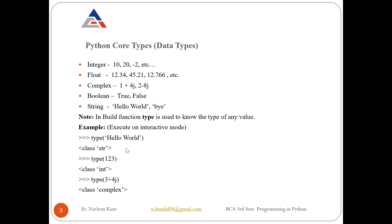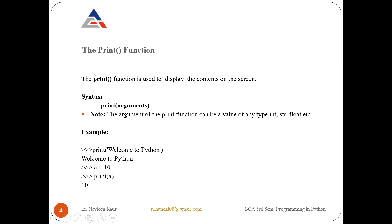If you want to check the type of a certain literal, in the shell you write the function 'type()' and in the brackets write the literal. For example, type('hello world') will tell you it belongs to the class string. Type(123) will tell you it's of type integer. Type(3 + 4j) will tell you it's of type complex. If you have installed Python, you can check this on your interactive shell.